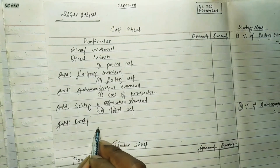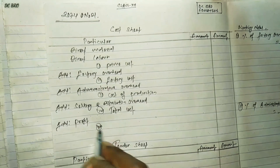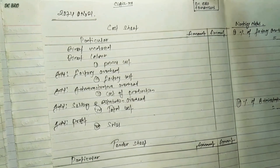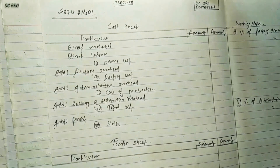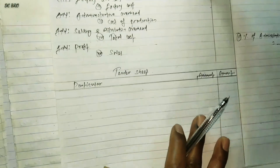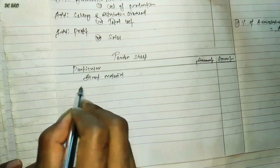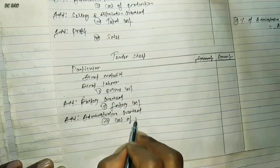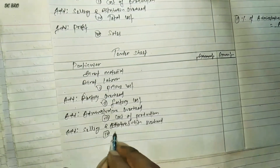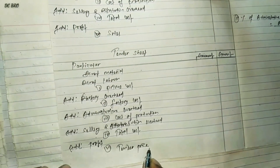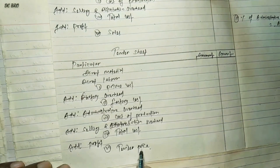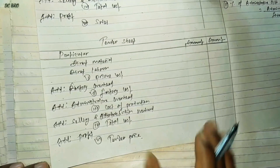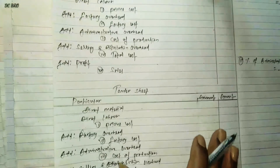Add profit to get the sales amount or selling price. This is the same thing I have written here in the cost sheet — the same thing that I have photocopied. The last thing is the tender. This is the sales figure; this is the tender. This is the same amount.